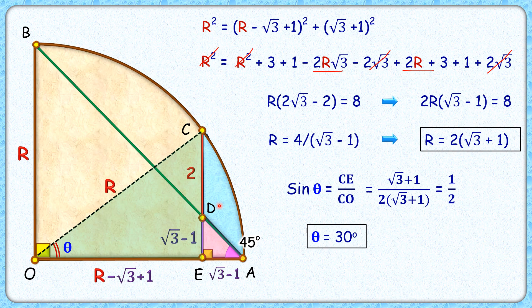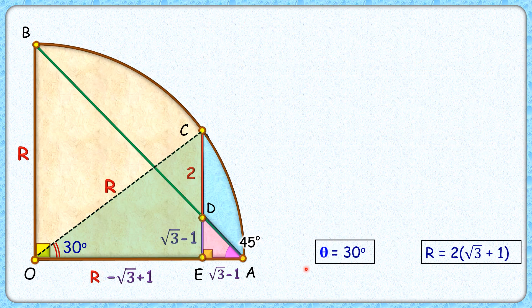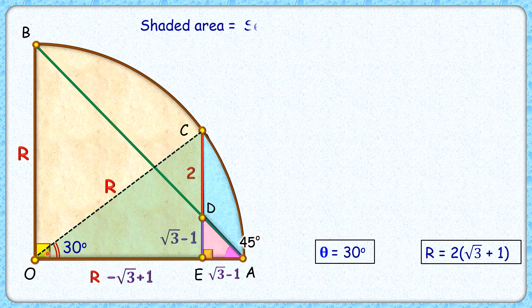To find the shaded region, let's retain this R and theta here. Now that we have the value of theta and R, let's find the shaded region, which is nothing but area of sector minus area of green triangle minus area of pink triangle.